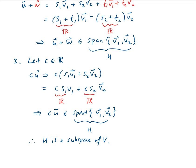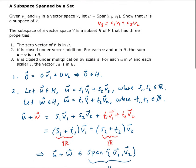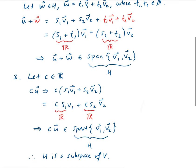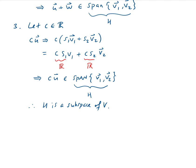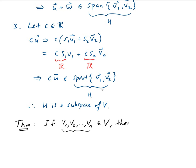This leads us to a general theorem. This particular example was for two vectors, but we can expand on it. If we have a set of vectors V1, V2, up to Vn that are in the vector space V, then the span of V1, V2, through Vn is a subspace of V.